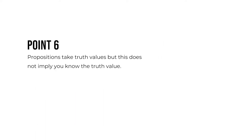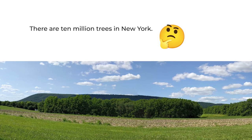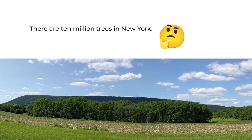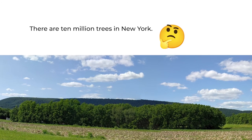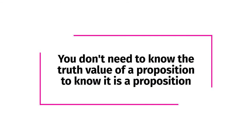Sixth, in order for a sentence to express a proposition, it only needs to be the type of thing that can take a truth value. This does not imply that we know the truth value of all propositions. I don't know if there are 10 million trees in New York — I don't know if this is true or false — but the sentence 'there are 10 million trees in New York' expresses a proposition. In short, you don't need to know the truth value of a proposition to know if something is a proposition.